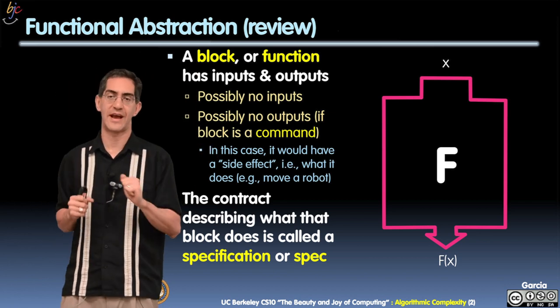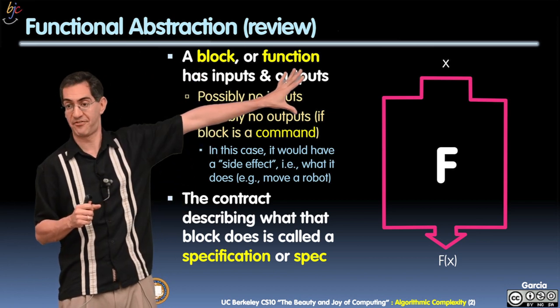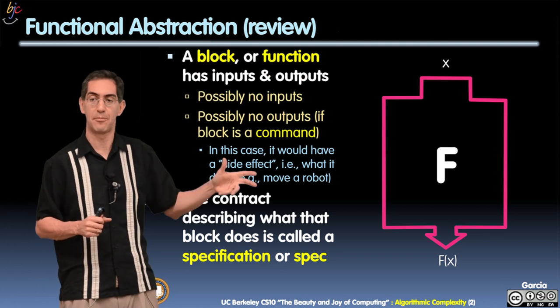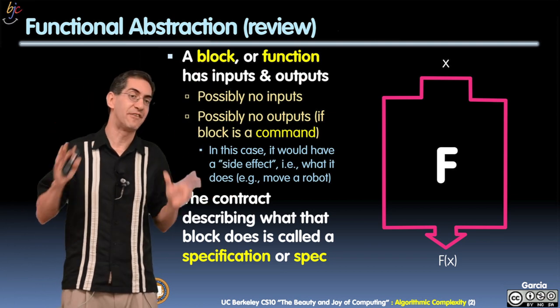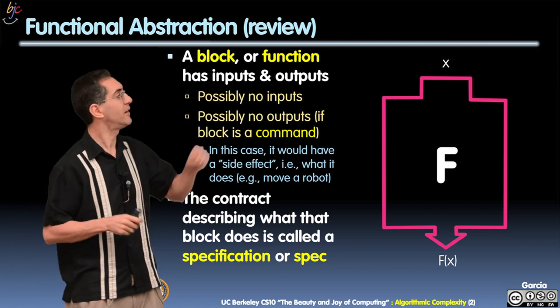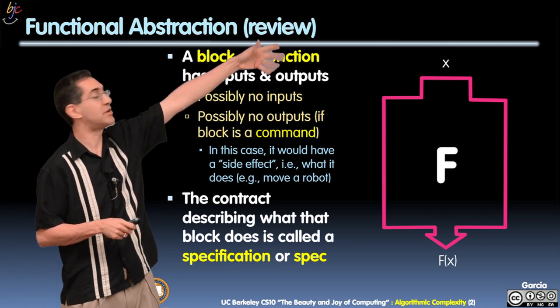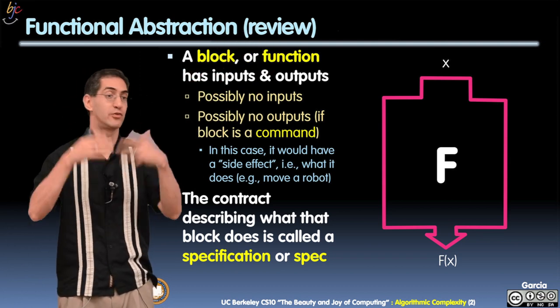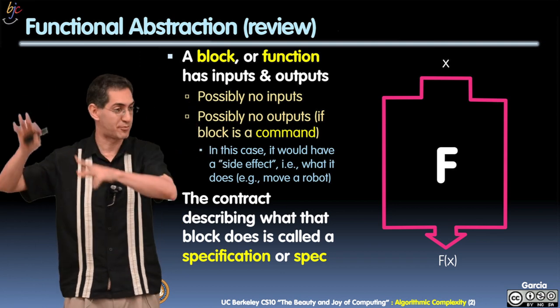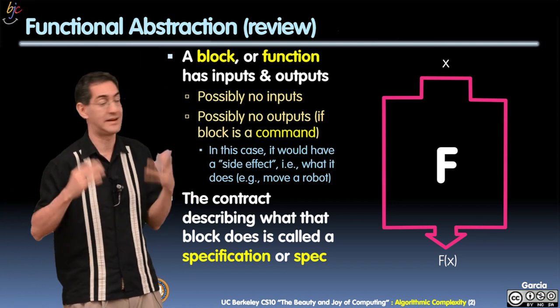So here's a review of functional abstraction. Here is a function f. You've seen it before. It has inputs, it has outputs. The outputs are only a function of the inputs. And you have possibly no outputs. This block could be a command whose goal is to draw something or to move a sprite or to make a sound. That's OK too.